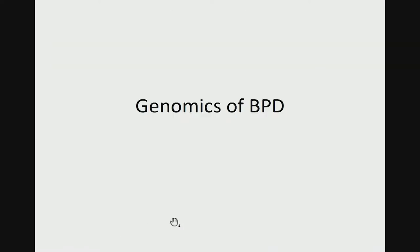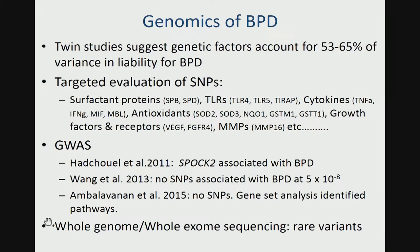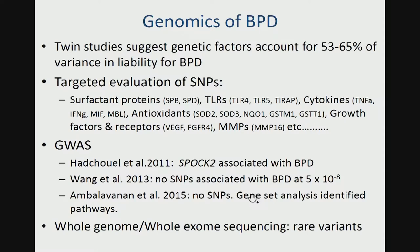Let's briefly discuss the genomics of BPD. Twin studies suggest that genetic factors account for about 53 to 65 percent of the variance in liability for BPD. Targeted evaluation of SNPs indicates roles for SNPs in surfactant proteins, toll-like receptors, cytokines, antioxidants, and so on — but most of these have been from small studies and have not been validated. There have been three genome-wide analyses: Hatchwell indicated SPOC2 was important, but that wasn't validated in studies by Wong or in the Neonatal Network study. Our study in the Neonatal Network did identify some pathways. It seems most of BPD may be related to rare and uncommon variants, so whole exome or whole genome sequencing may be needed to identify specific mutations in a particular infant.